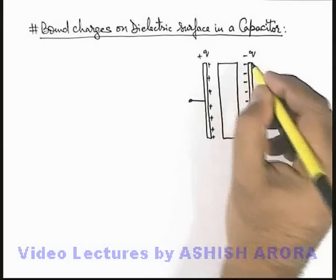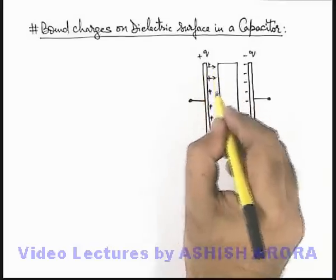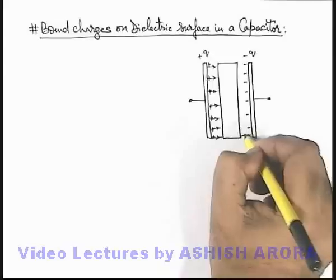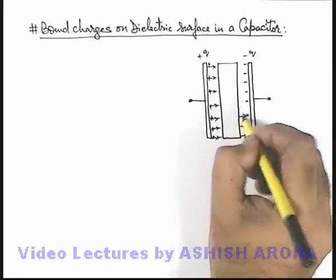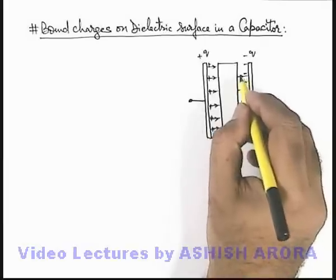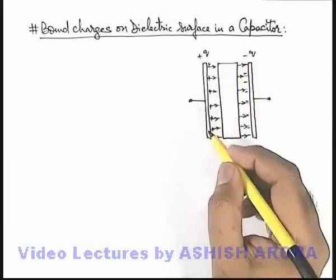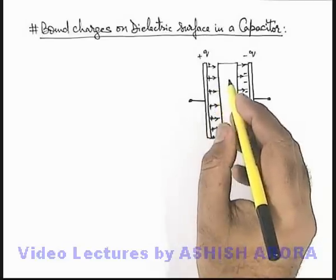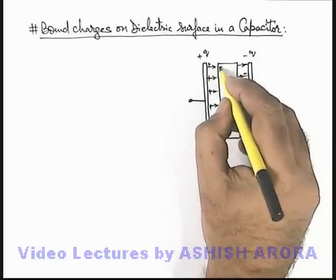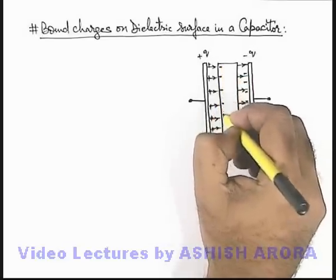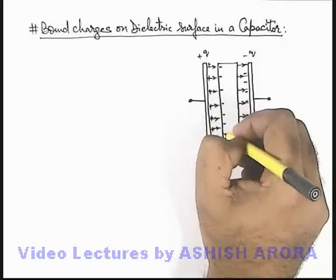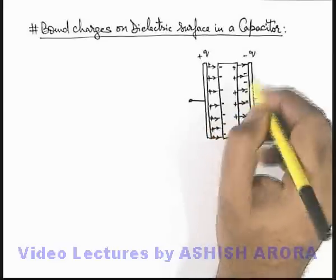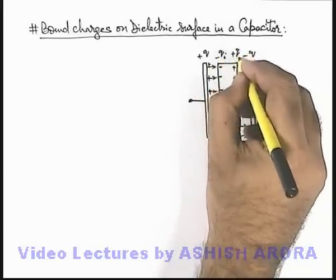Due to these charges, an electric field exists between the plates. When the electric field passes through the dielectric, it causes polarization in the dielectric, due to which inside the dielectric the electric field reduces. Due to this applied electric field on the dielectric slab, bound charges appear — which we have studied in electrostatics — opposite polarity bound charges appear in front of these plates, say these are minus q_i and plus q_i respectively.